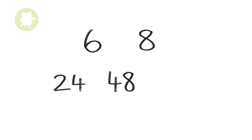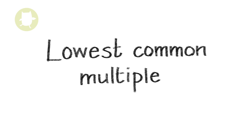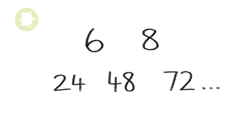Common multiples. Let's keep the numbers 6 and 8. The common multiples of these numbers are 24, 48, 72, and so on. The lowest common multiple of 2 numbers is the smallest number that is a multiple of both numbers. So, the lowest common multiple of 6 and 8 is 24. The initials L, C, M mean lowest common multiple.